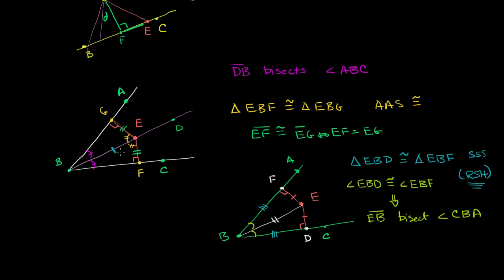Here we showed that if something sits on a bisector, it's equidistant from the sides of the angle. And here we showed that if it's equidistant from the sides of the angle, it sits on the angle bisector — or it could even be the endpoint of an angle bisector, but clearly it sits on it.